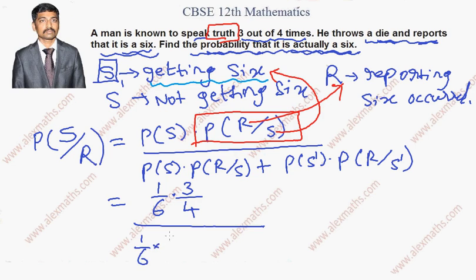And we have to copy the same term in the denominator plus. What is P of S dash? It is not getting 6. It means other than 6. So the value is 5 by 6 because there are 5 remaining numbers, into.